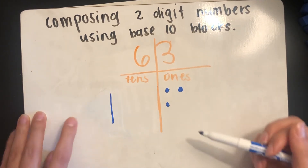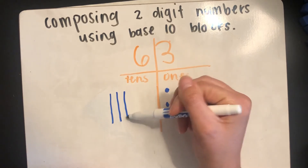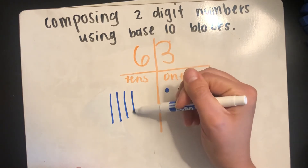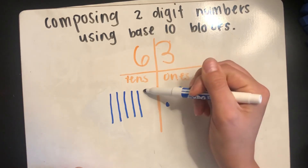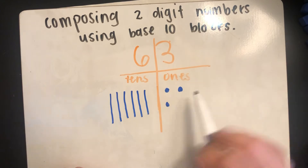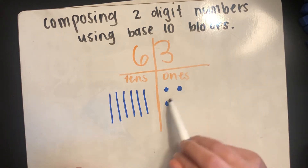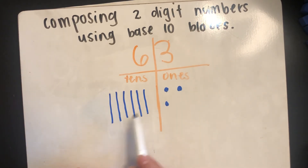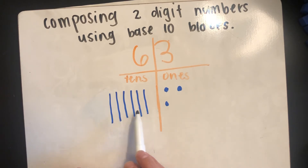So counting by tens: 10, 20, 30, 40, 50, 60 — then 61, 62, 63. We should have six 10 sticks — one, two, three, four, five, six. Exactly.